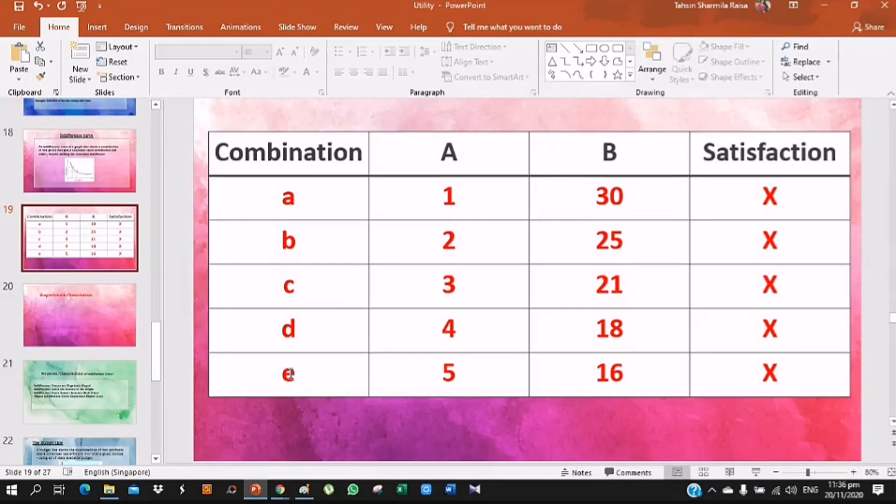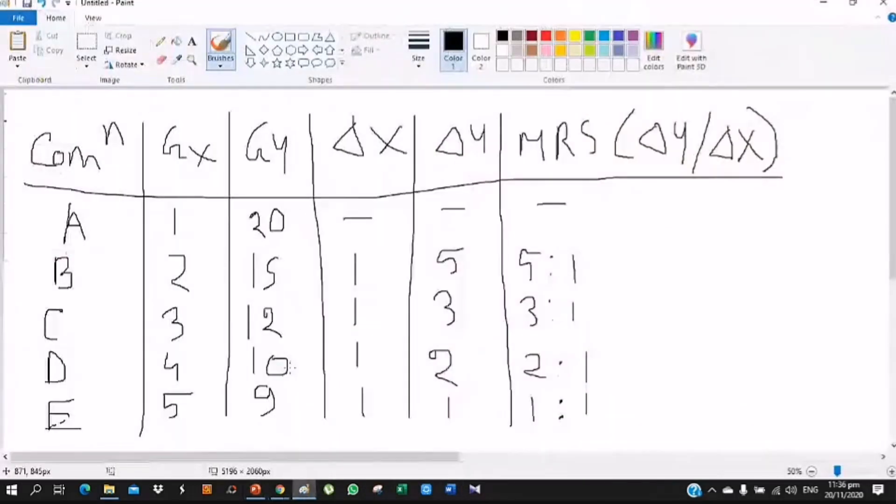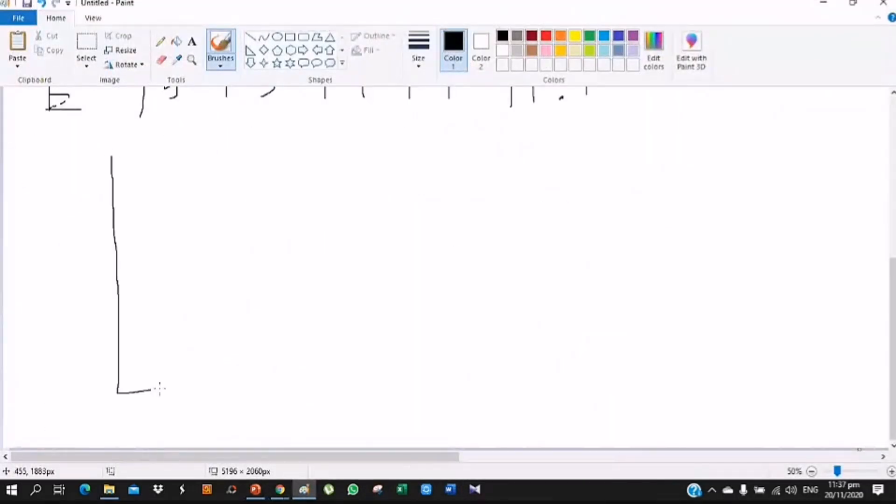Now we see the diagrammatic presentation of indifference curve. If on the vertical axis we have good B and on the horizontal axis we have good A, then the indifference curve will decrease.